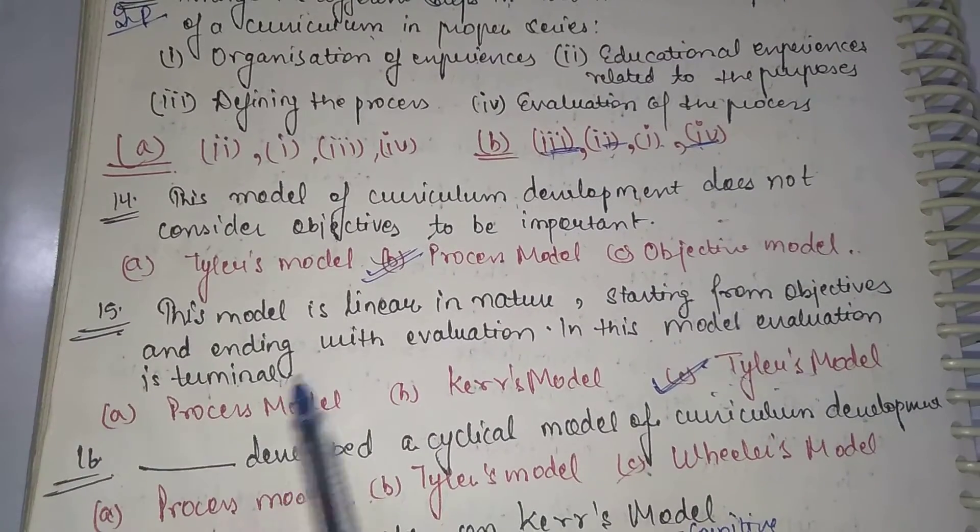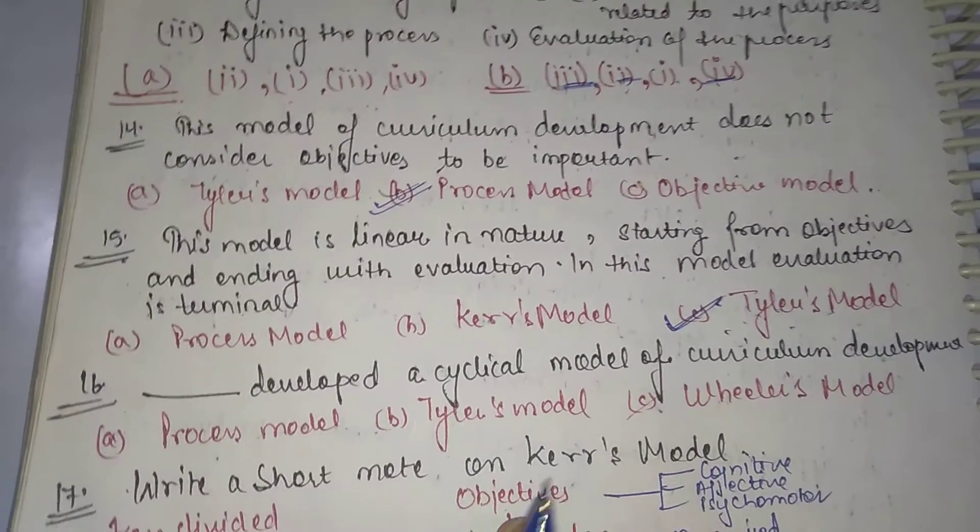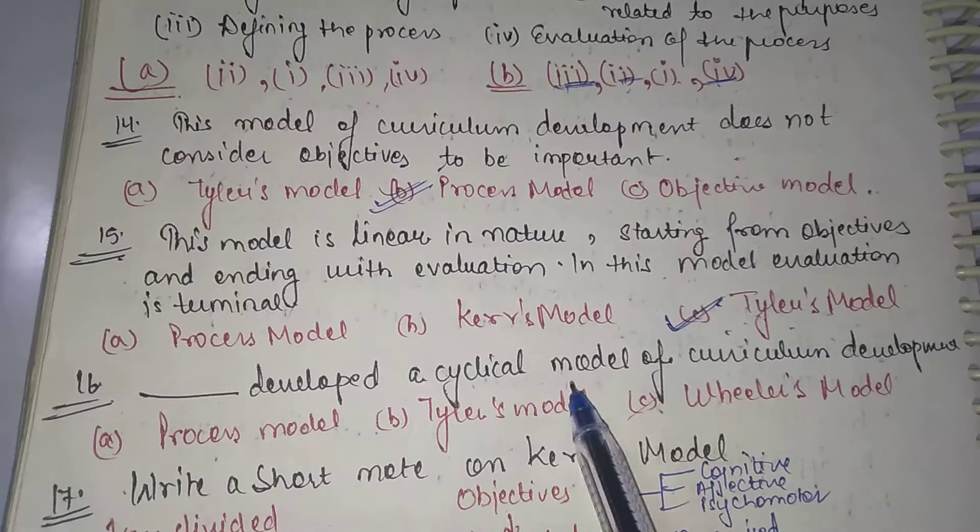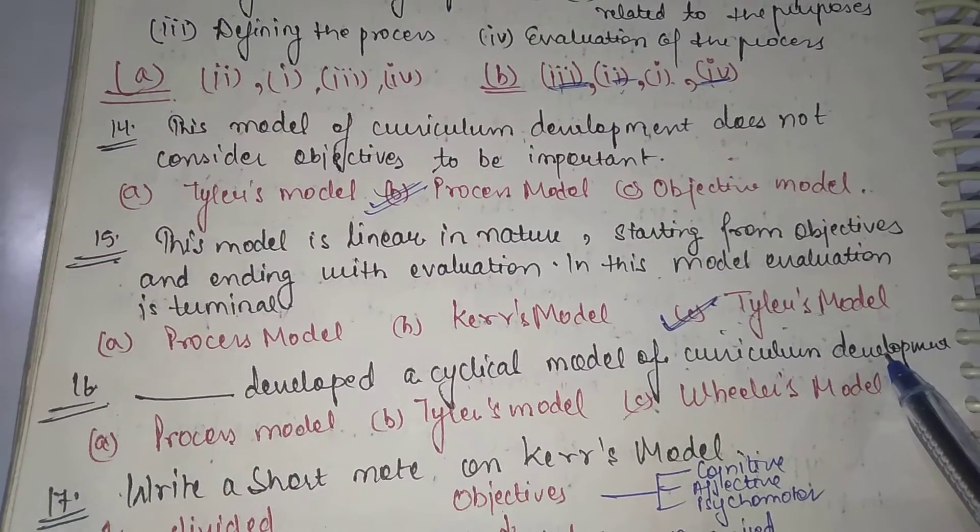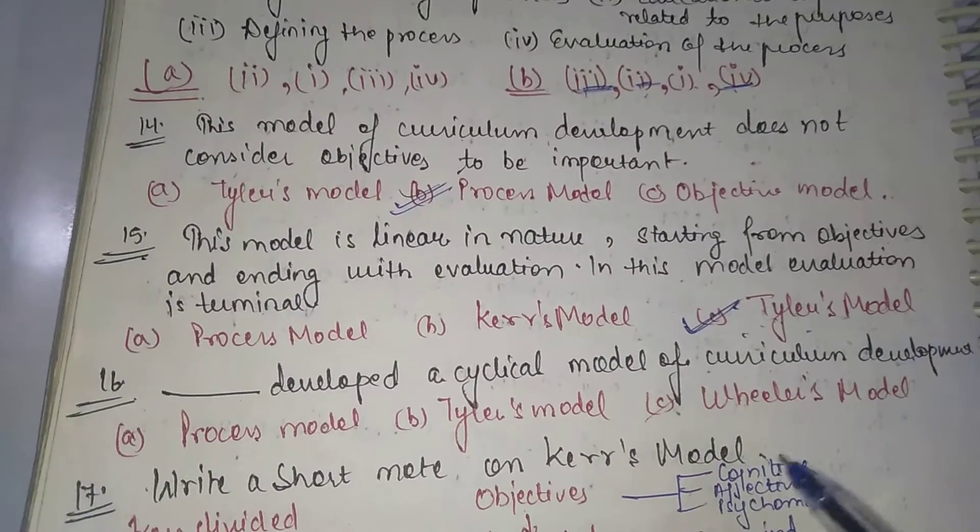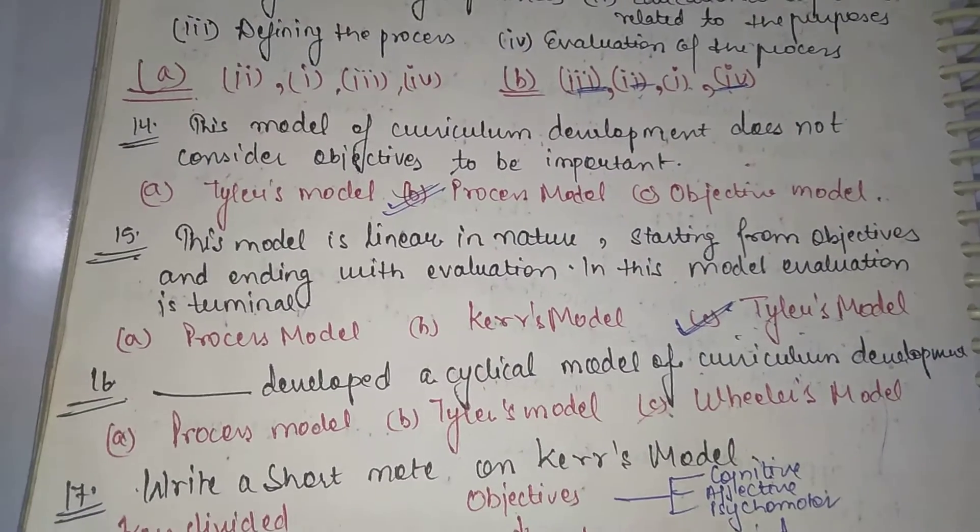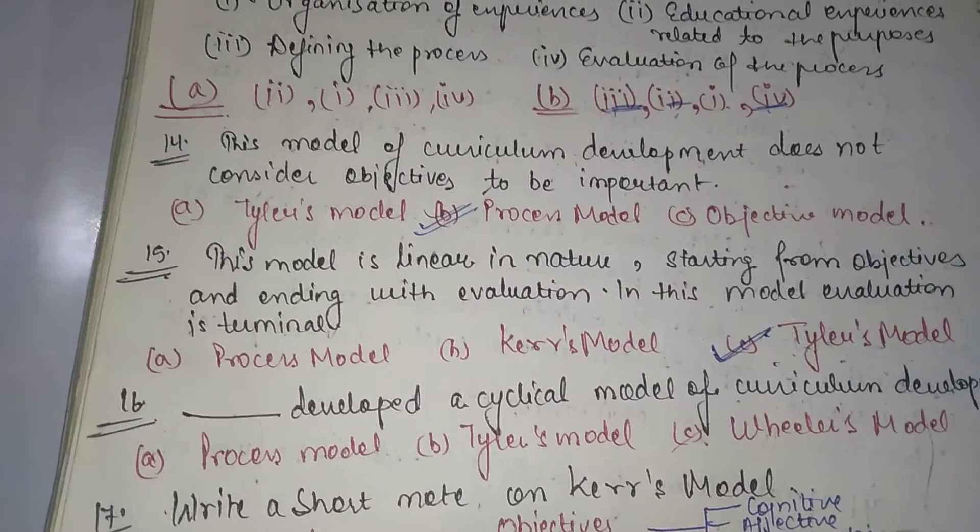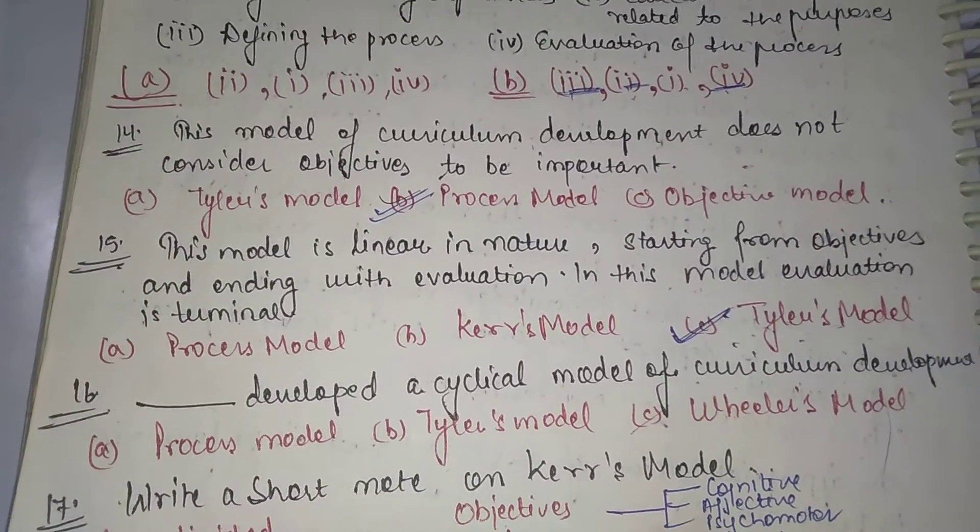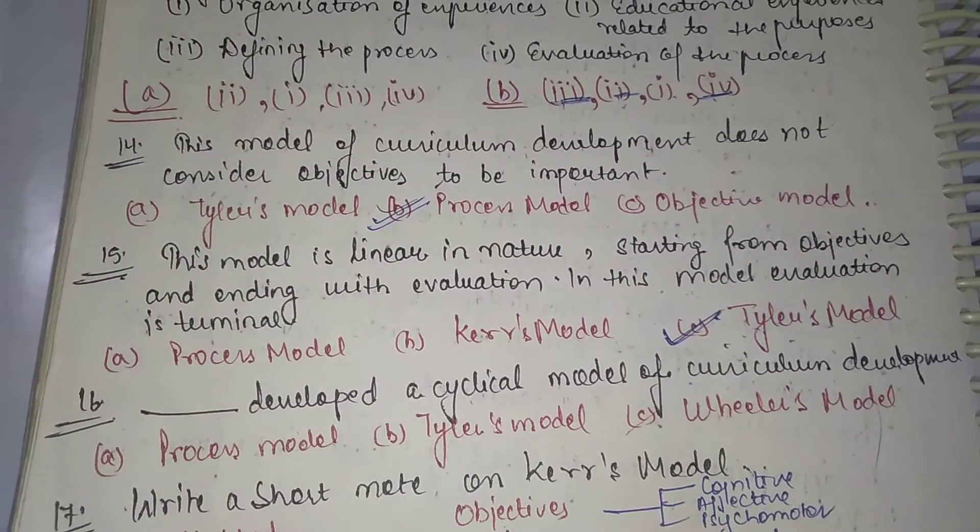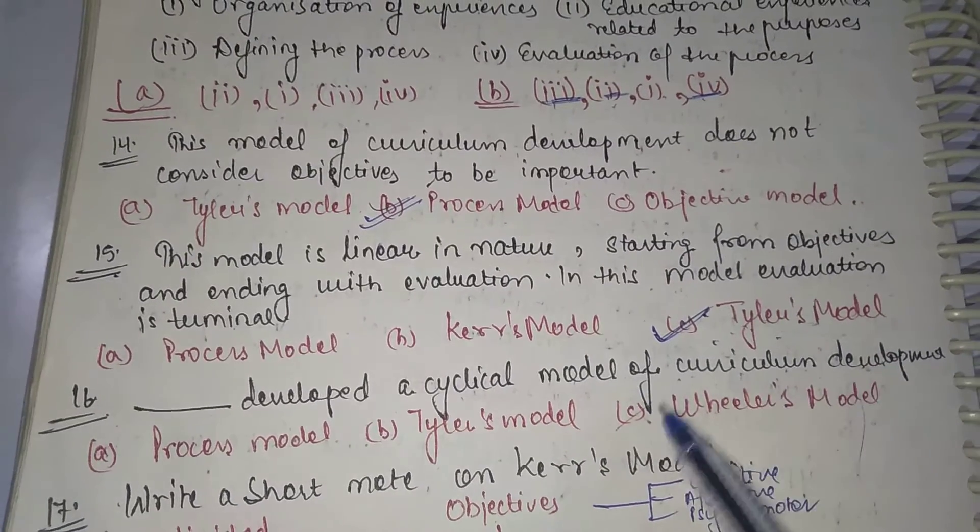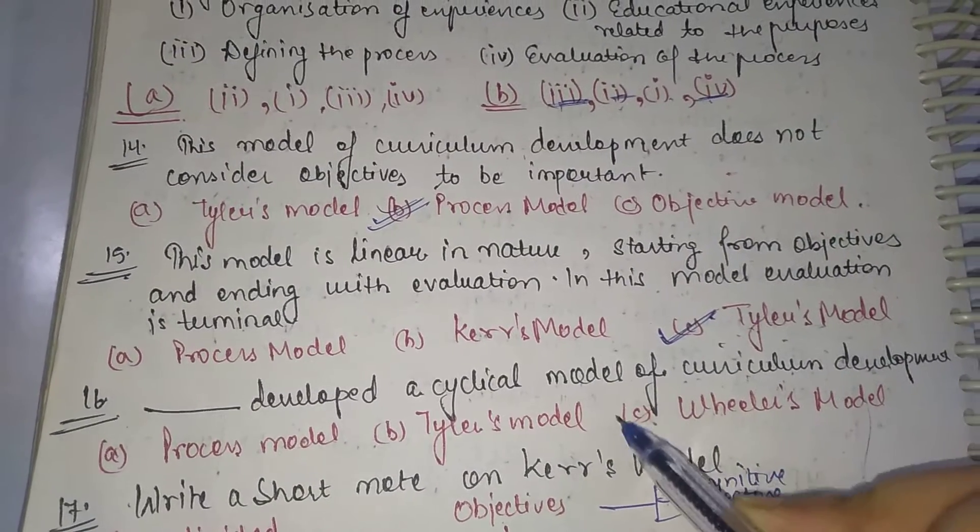Dash developed a cyclical model of curriculum development. Cyclical model is a model in which after doing your evaluation, you will change your goals and objectives again. You will review and change according to your evaluation. This is basically a cyclic process developed by Wheeler.